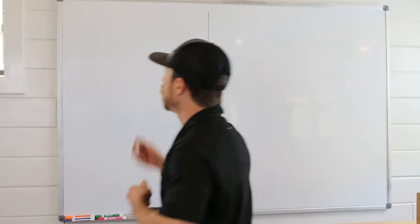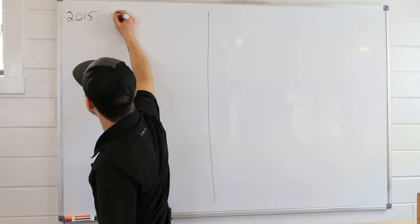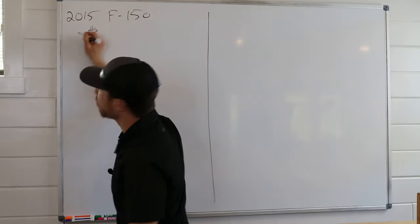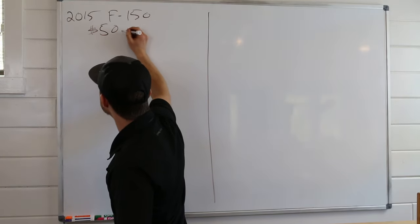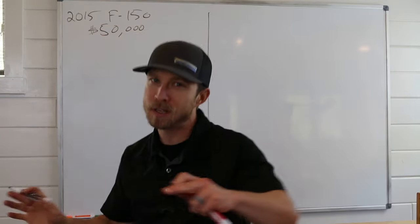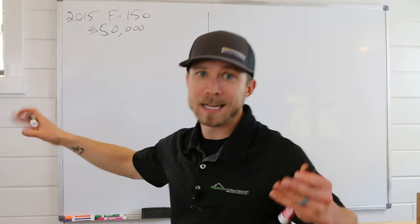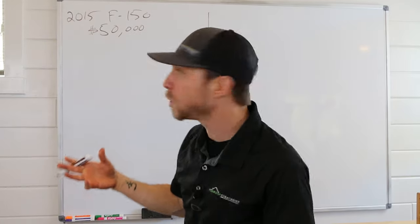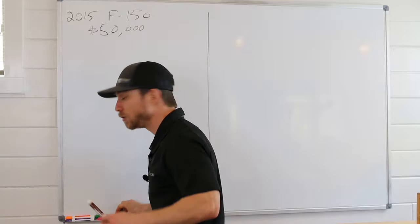So, Mr. Homeowner, let's pretend that you're driving a 2015 Ford F-150 pickup truck. It was a top-of-the-line truck, and when you bought it, it was $50,000 — I'm using all rough numbers for easy math. Now it is 2020, so the vehicle's five years old. Let's say something bad happens, unfortunately. Don't worry, everyone's going to be okay — but the car gets totaled.